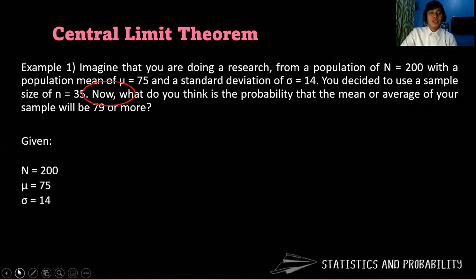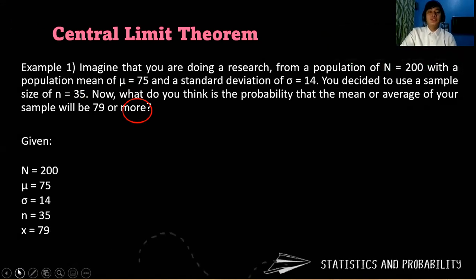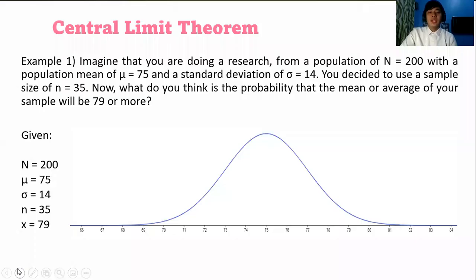We have n equals 35, which is our sample size, and our x which is 79. To represent 79 or more, this is how the graph would look like.